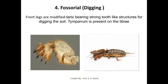The next is the fossorial type of legs, modified for digging purpose. The front legs are modified, bearing strong tooth-like structures for digging the soil. A tympanum is present on the tibia. This type of legs is found in case of the mole cricket, and the front legs of the mole cricket have strong tooth-like structures for digging the soil.